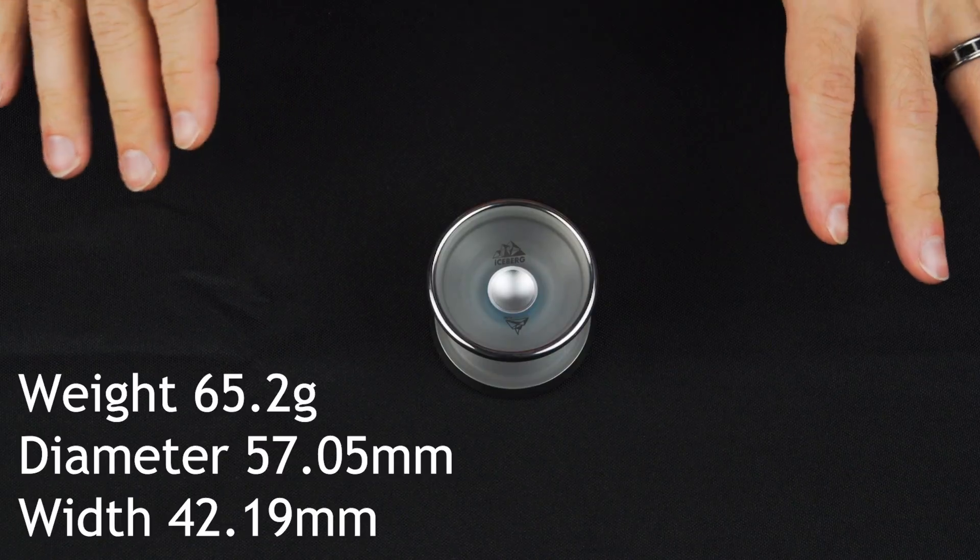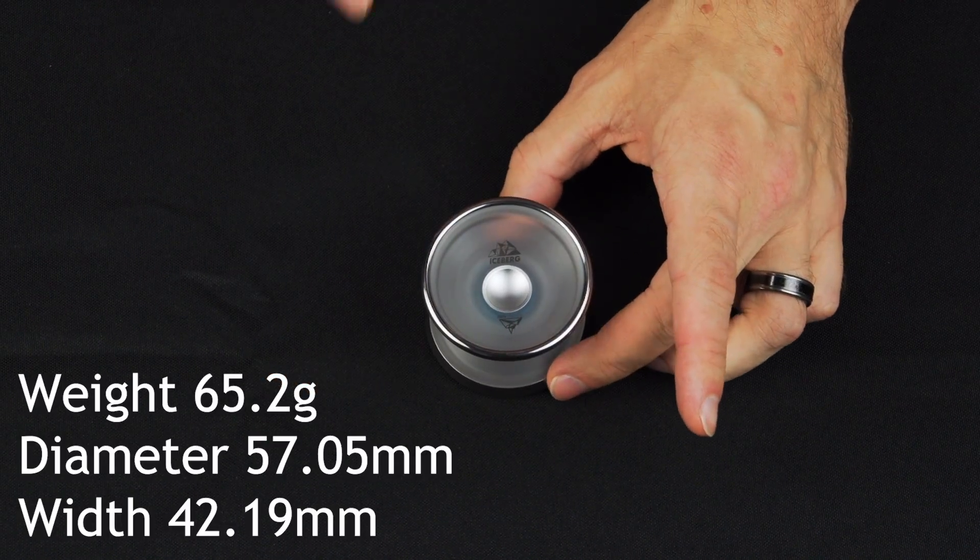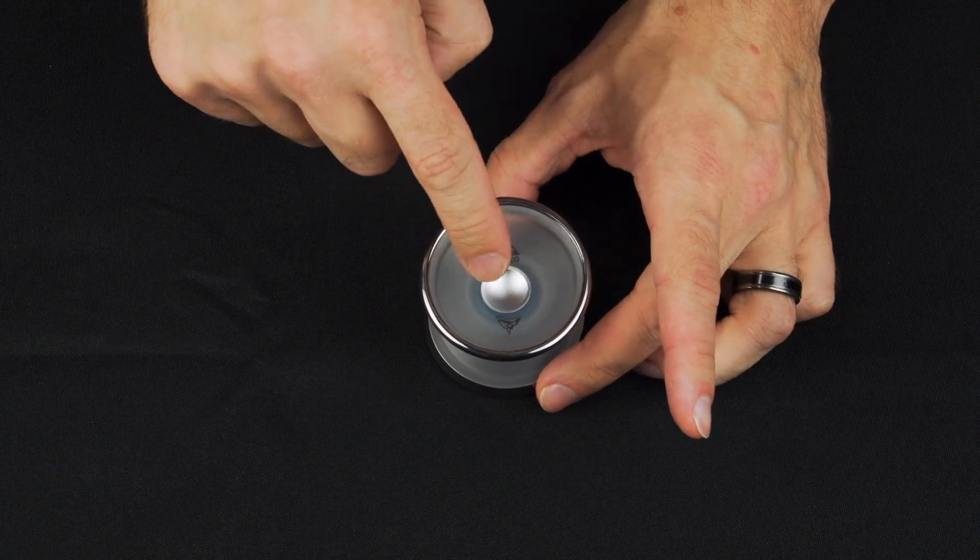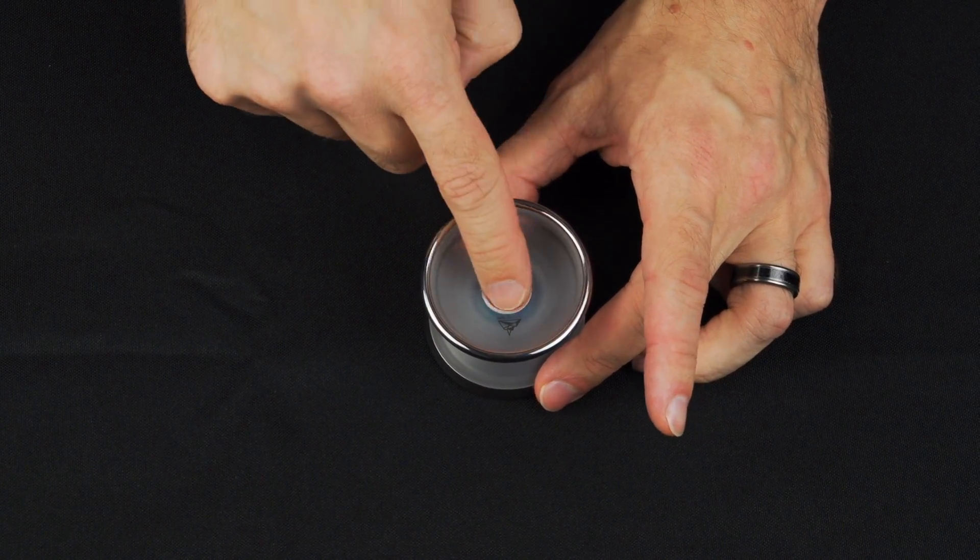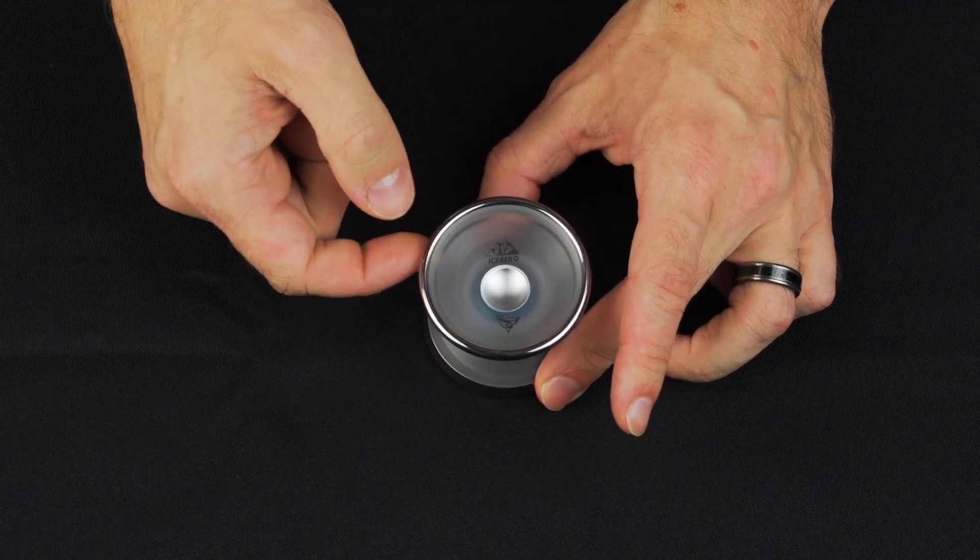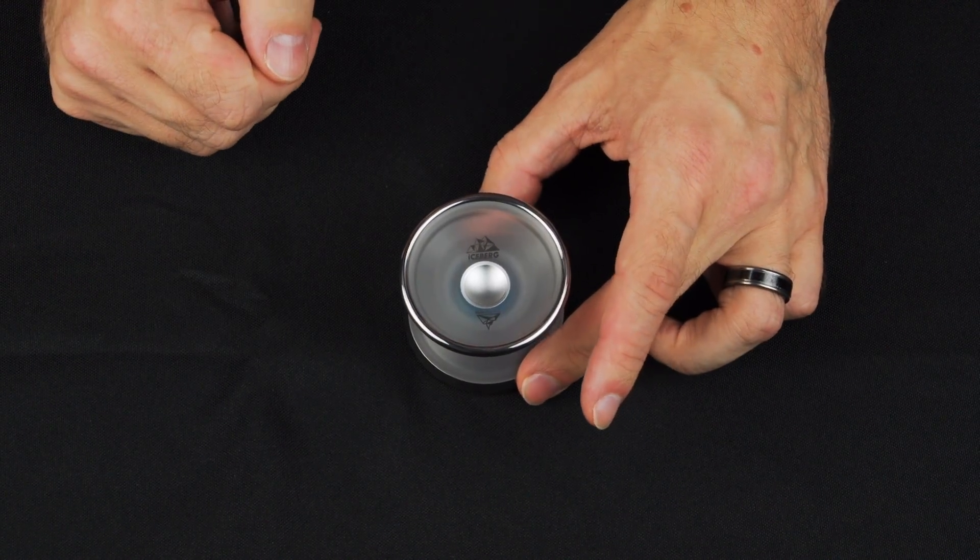So the Iceberg, if we're just talking about some of the specifics, the first thing that you'll notice is that it's got these stainless steel rims on it. The center is made out of aluminum, which has been blasted, so it's really good for finger spins, and then the body is made out of polycarbonate. As you can see, you can see through it a little bit, especially when you're doing grinds and stuff.